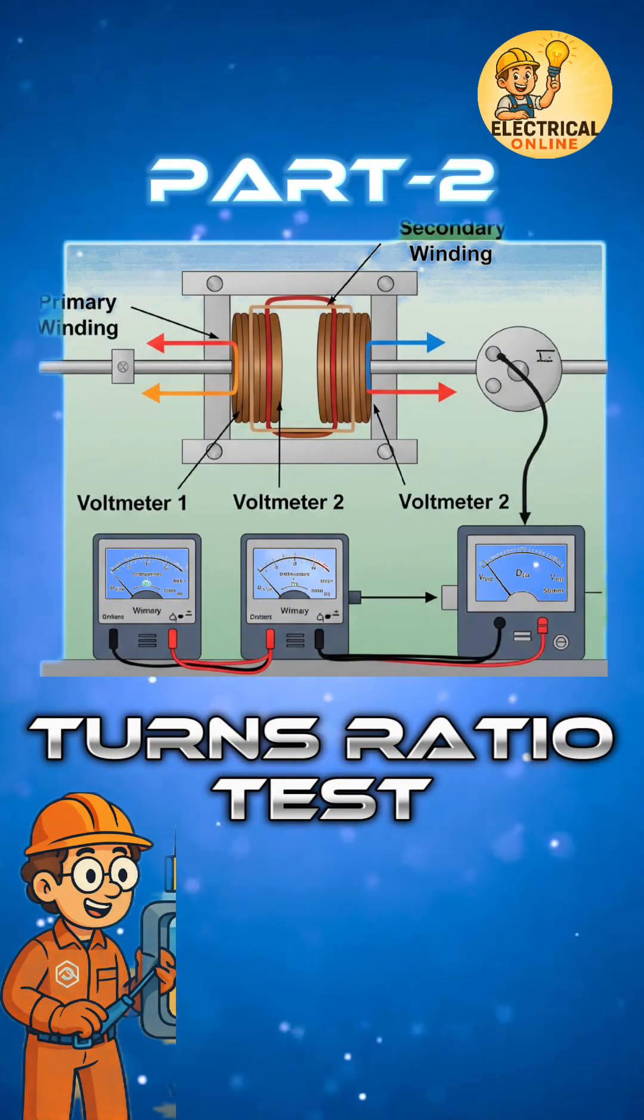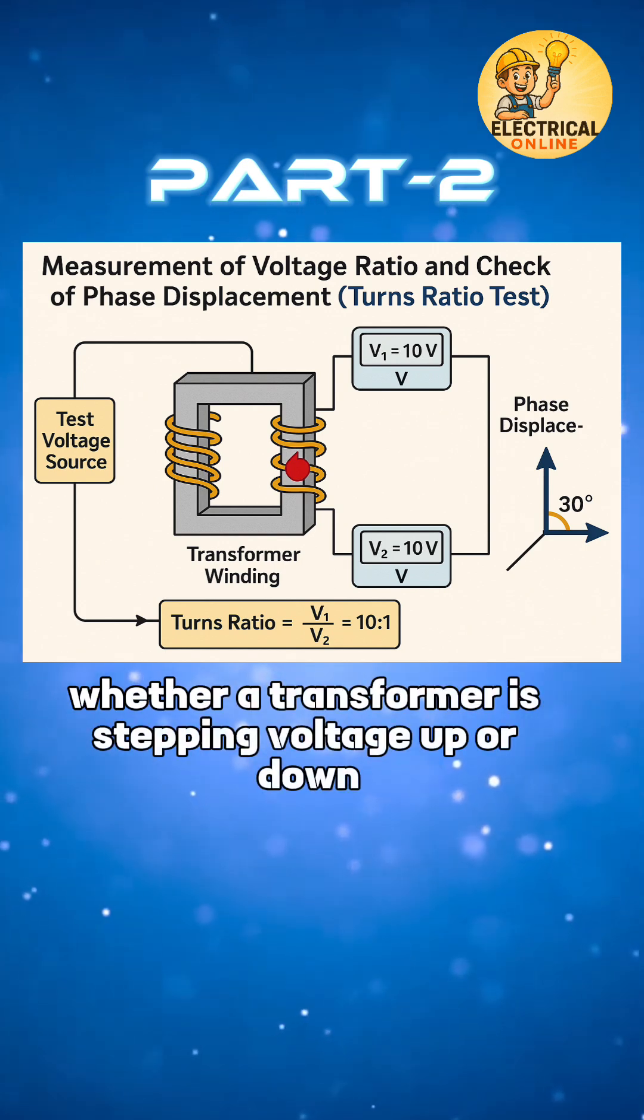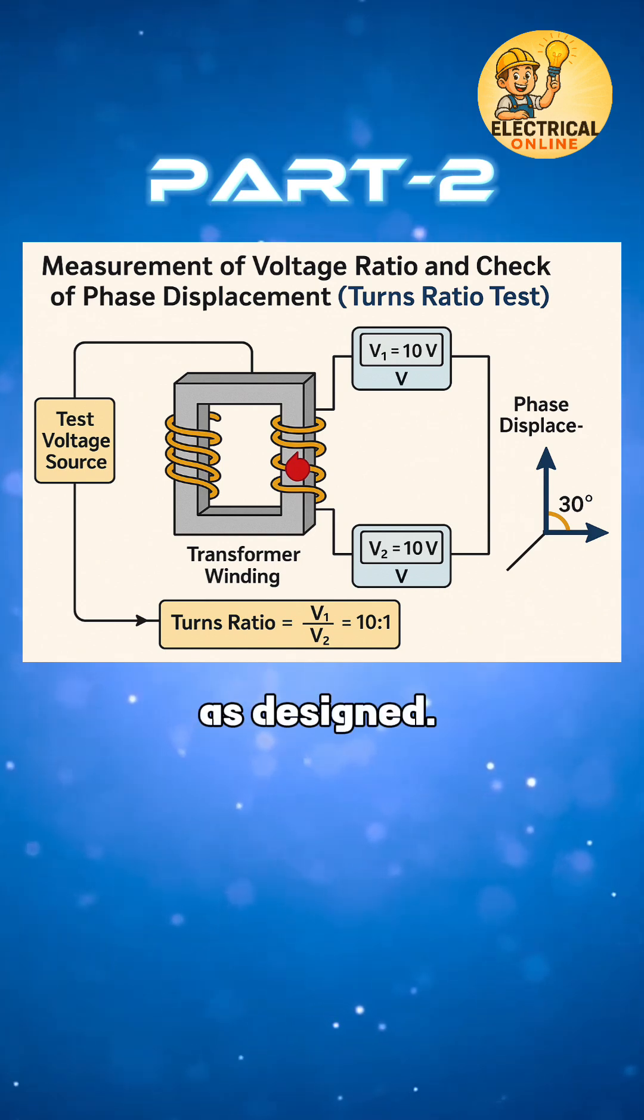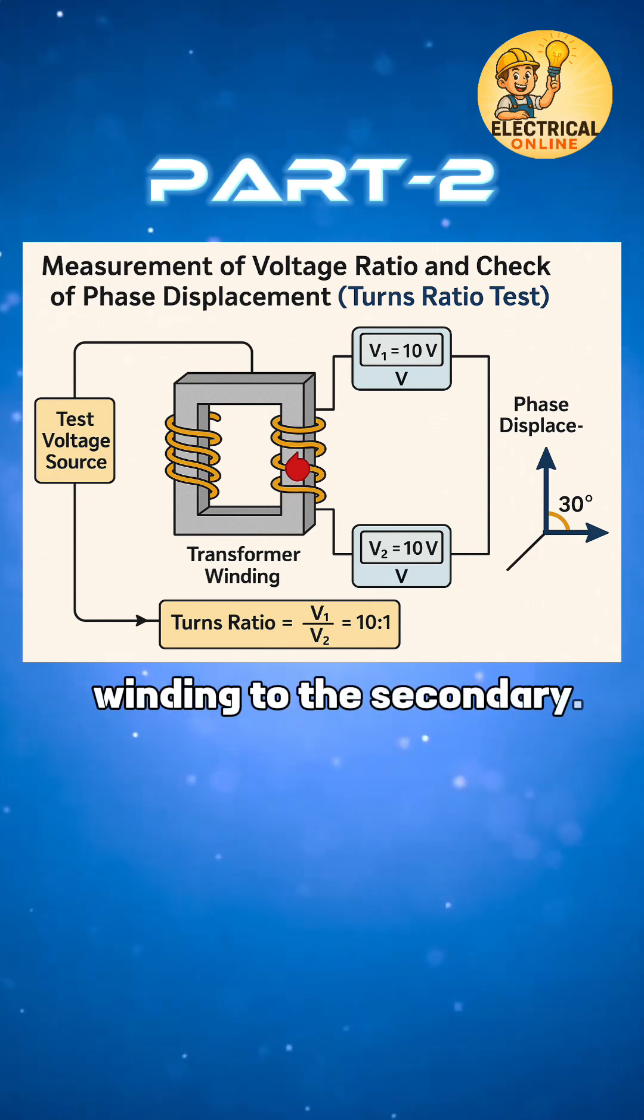In transformer test series, the second one is the turns ratio test. The turns ratio test checks whether a transformer is stepping voltage up or down as designed. It compares the number of turns in the primary winding to the secondary.